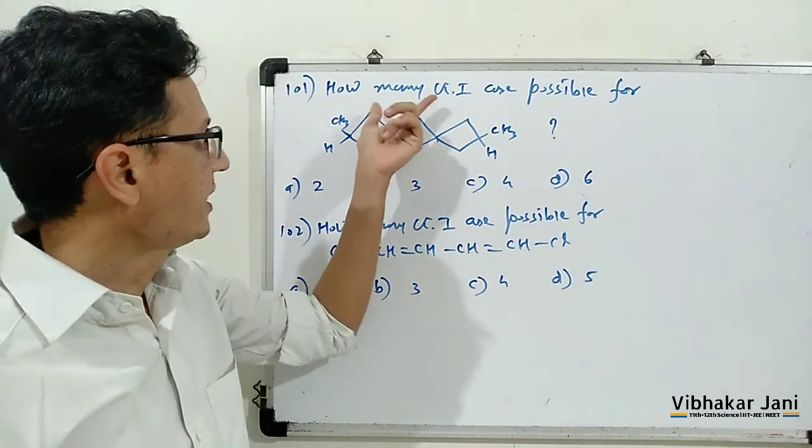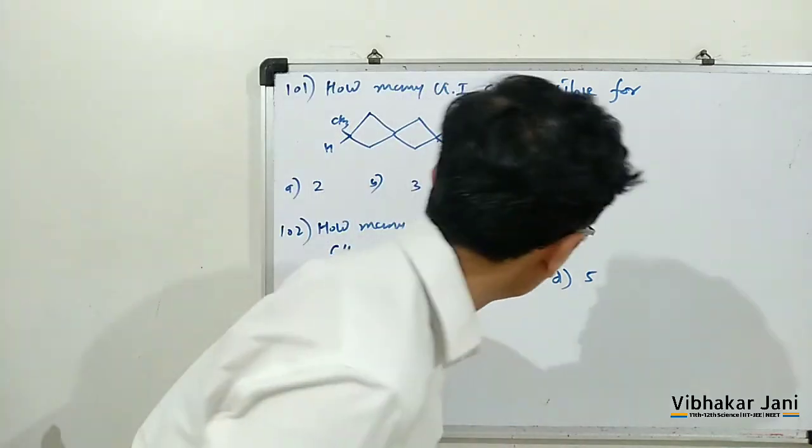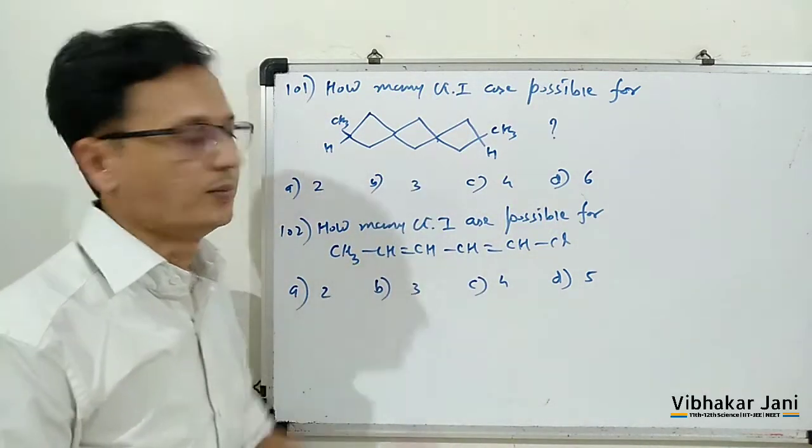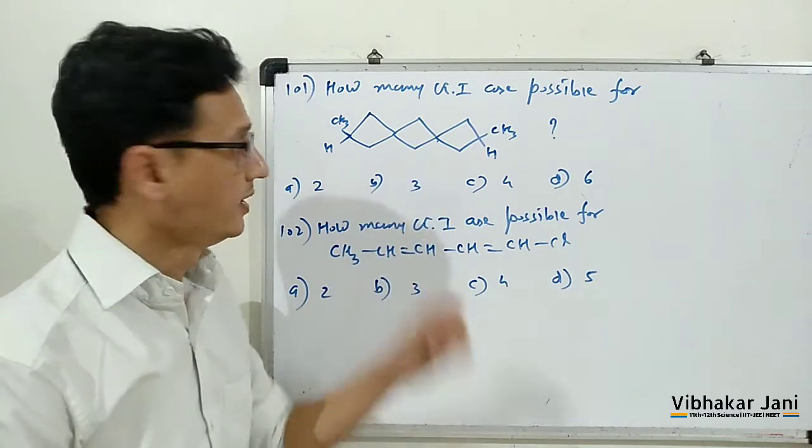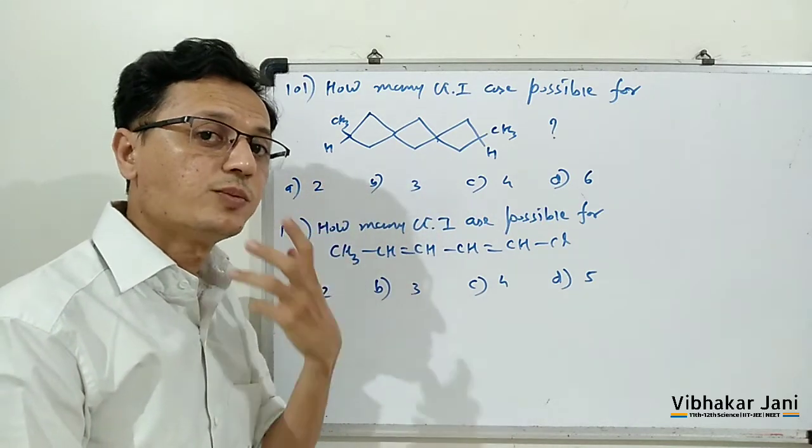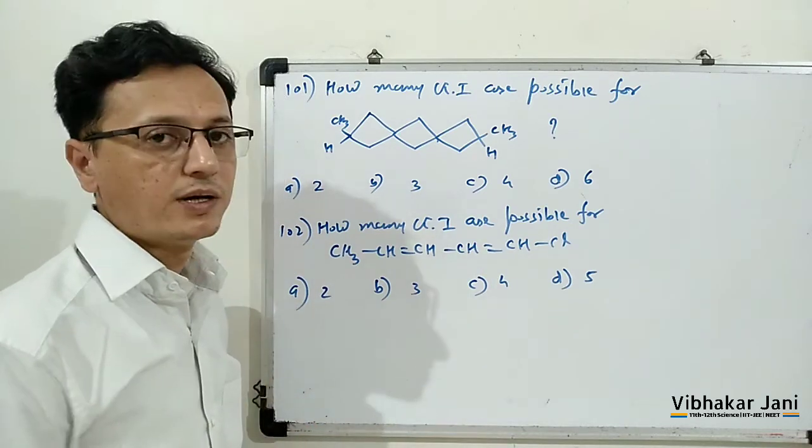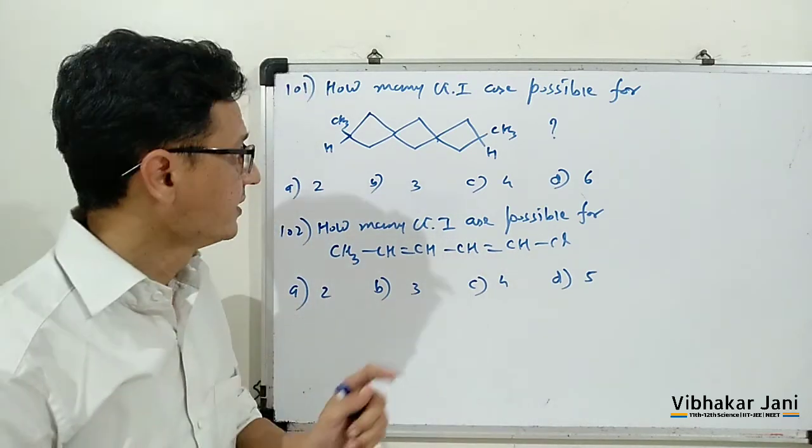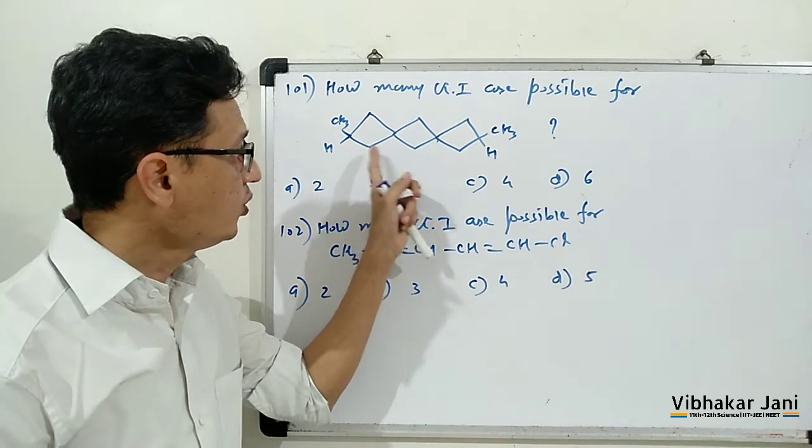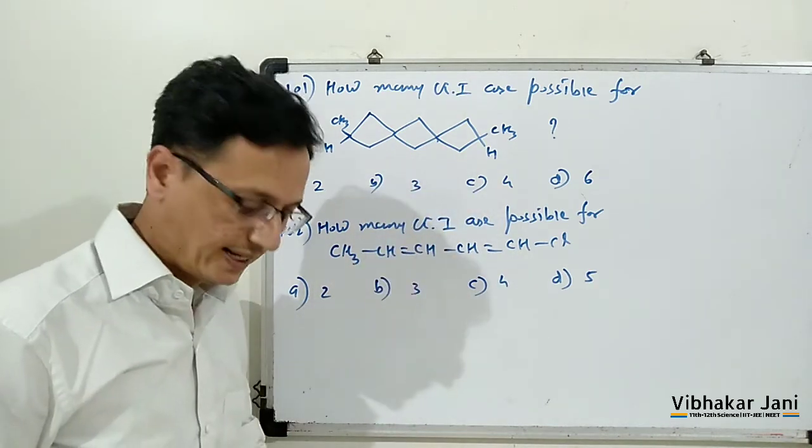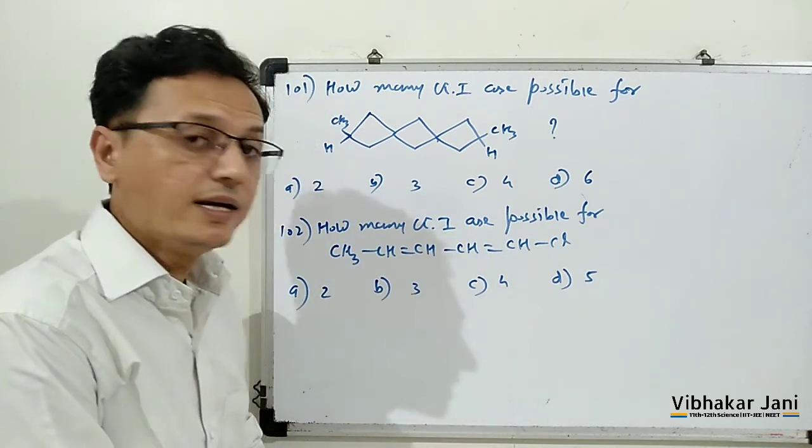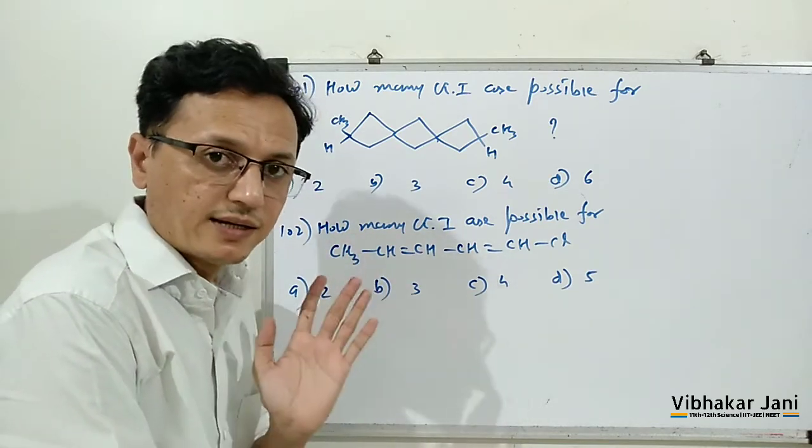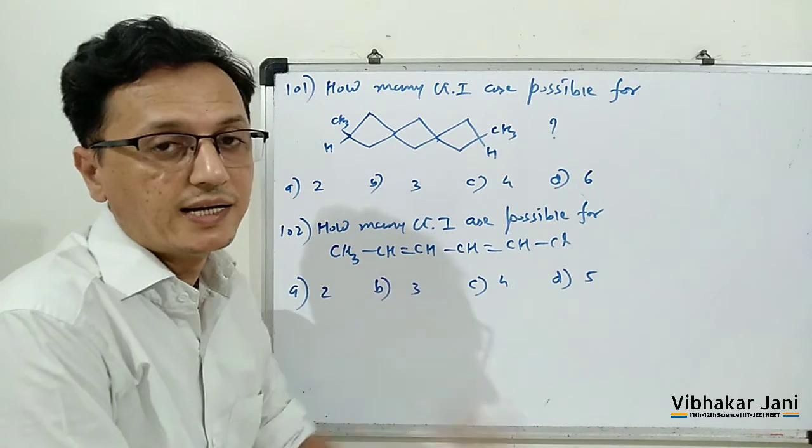Here we have how many GI are possible for this compound. Now this is a spiro compound. To find out the geometrical isomer in spiro compound, you have to remember one thing: if there are odd number of rings, then GI is possible. And if even number of rings are there, then no GI will be seen.